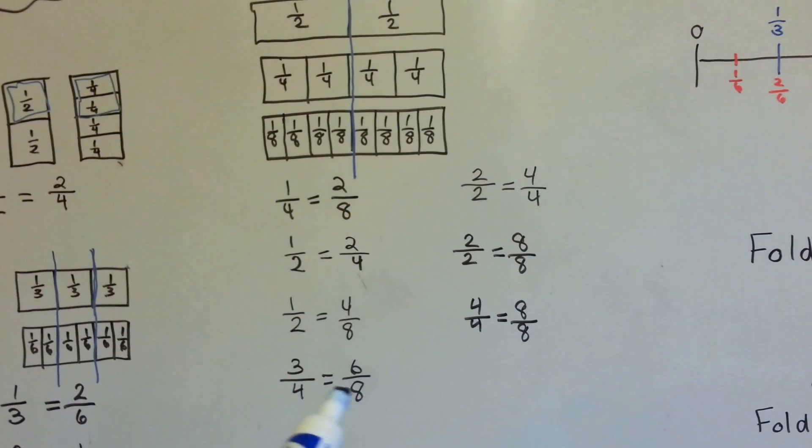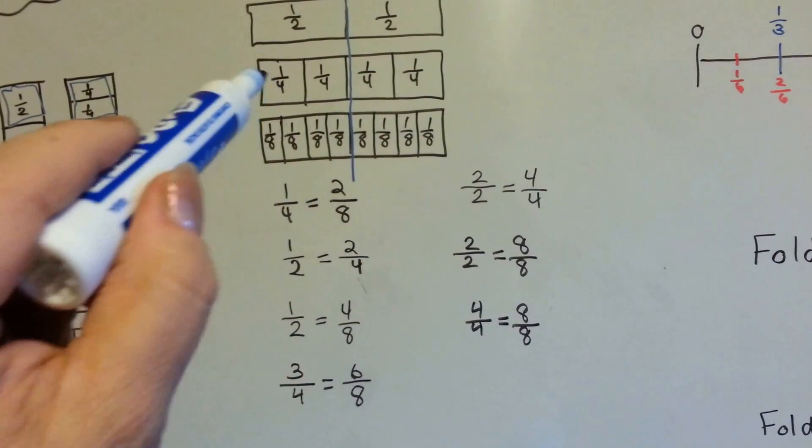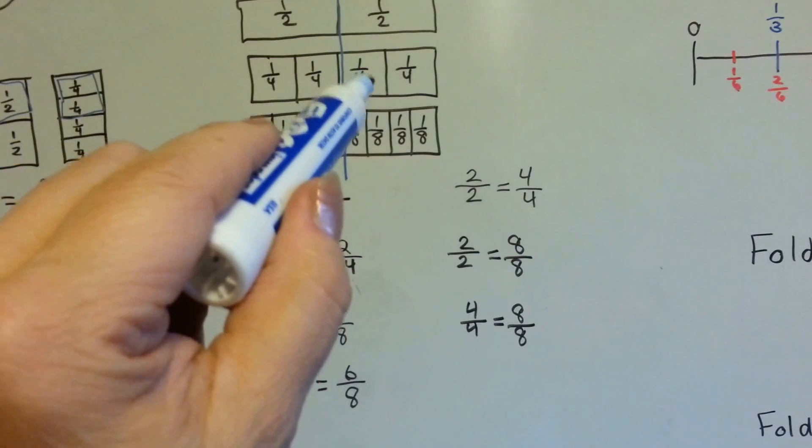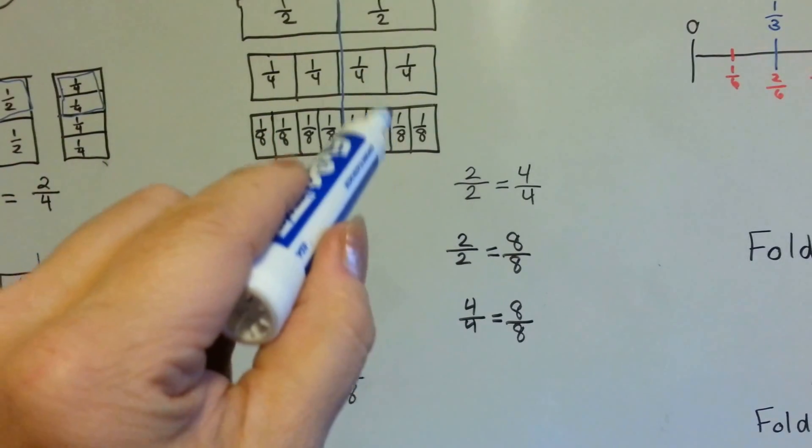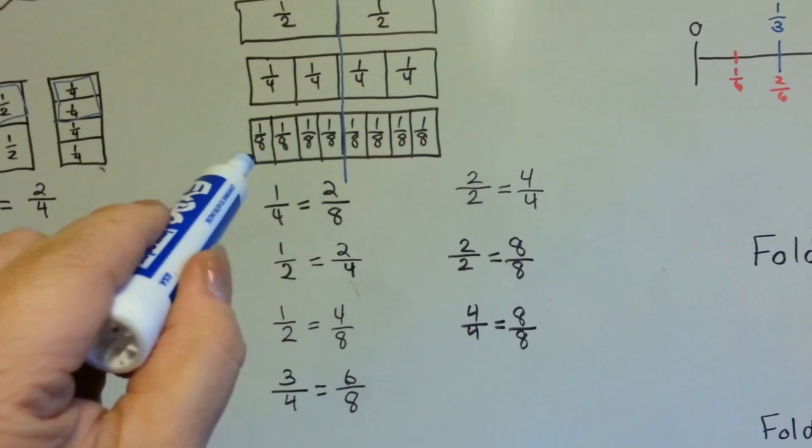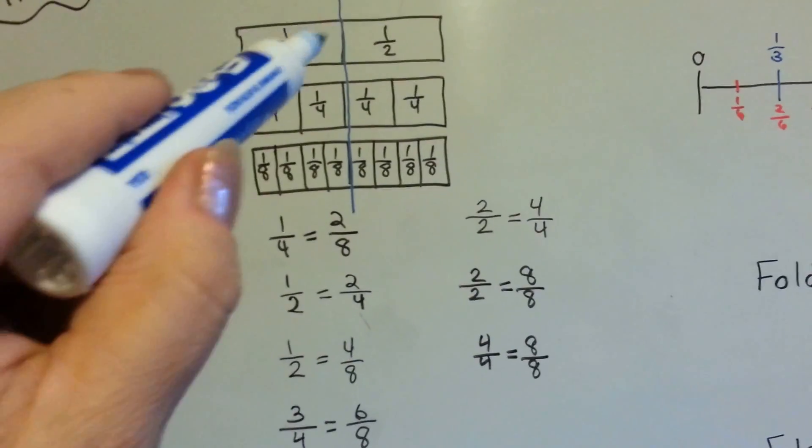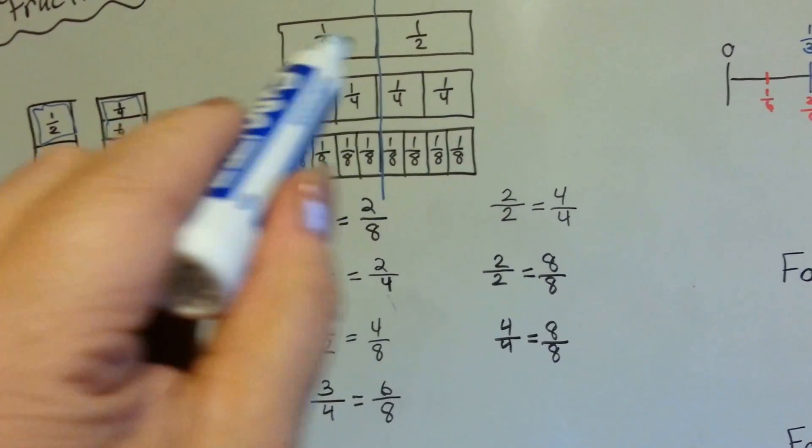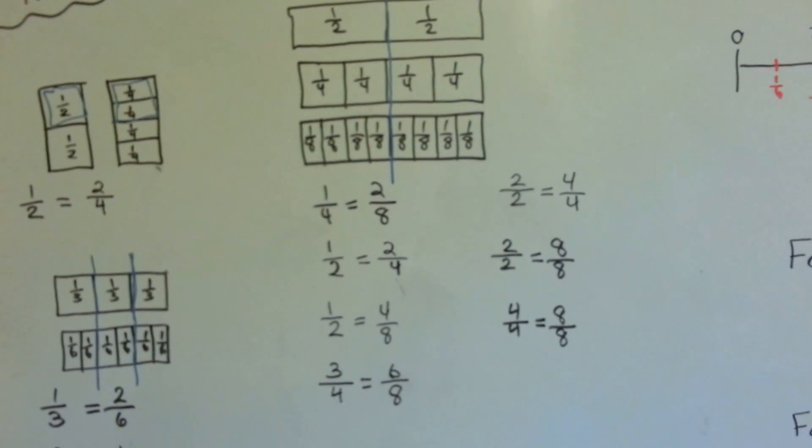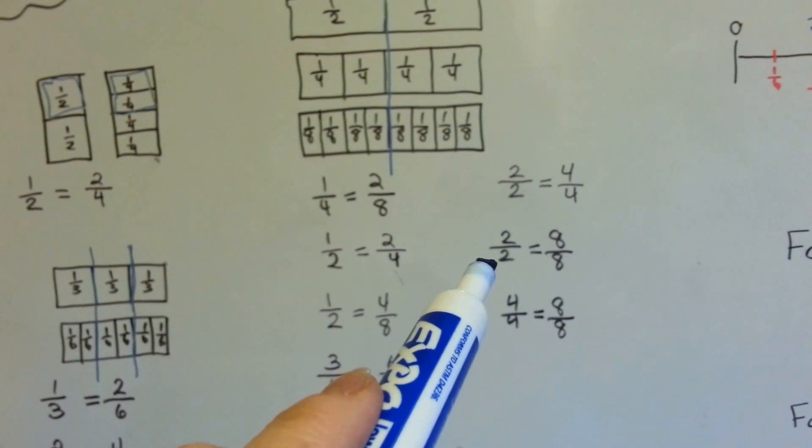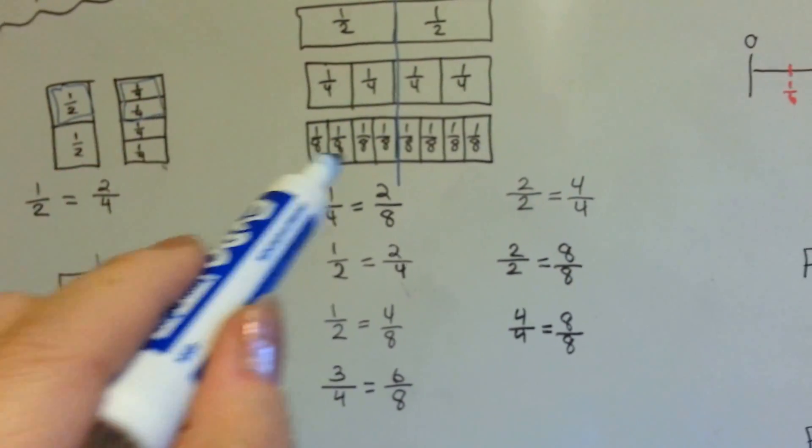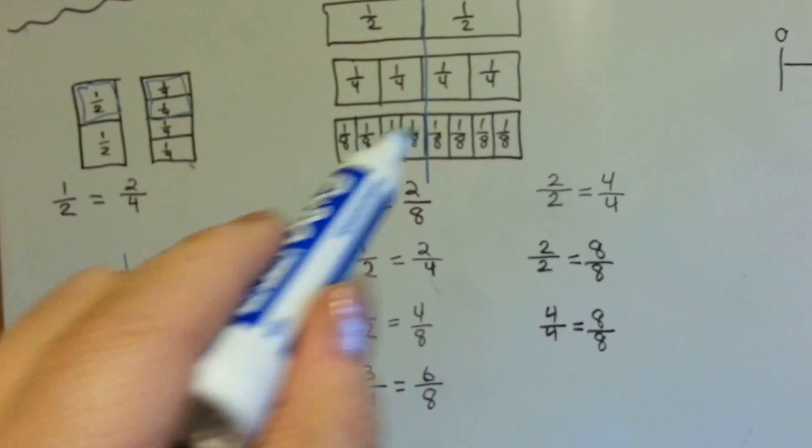Three fourths is equal to six eighths. Three fourths, one, two, three of these is equal to right here, to this six eighths. Two halves is equal to four fourths. It's the whole thing and the whole thing. And two halves are equal to eight eighths. These two halves are equal to all of these eighths. It's the whole thing.